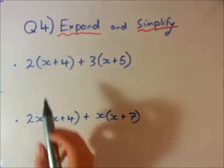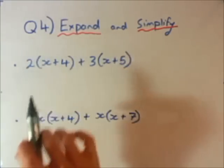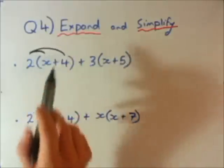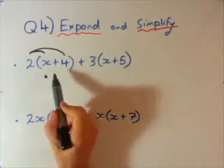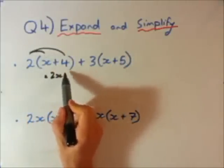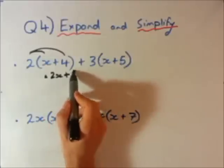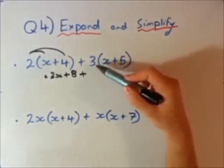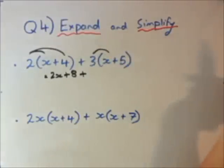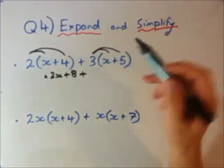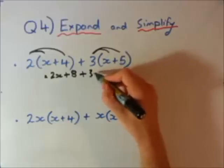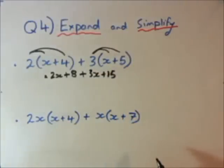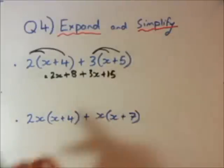So the first step I will do is expanding the brackets. Let's look at question 1, I'm going to go 2 by x and 2 by 4, so it's going to be 2x plus 2 times 4 is 8. And now we add 3 times x, 3 times 5, plus 15.